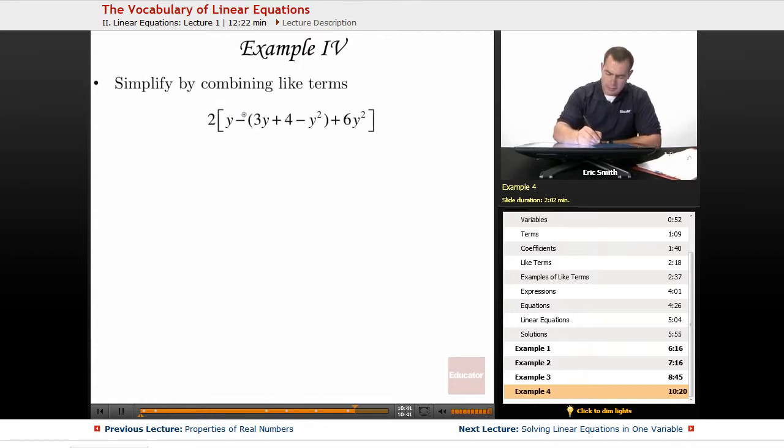So I'm going to take this negative sign and distribute it inside my parentheses here. Now that will give me a 2y minus a 3y minus a 4 plus a y squared plus a 6y squared.